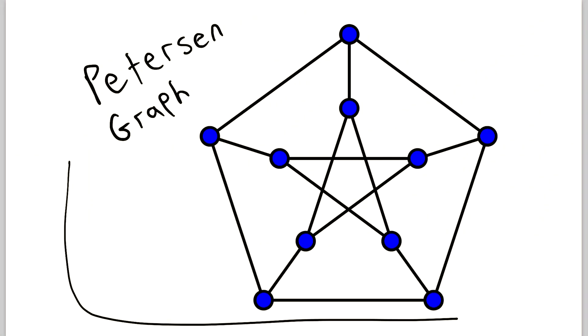And here is the most well known cubic graph. Every vertex in this graph has degree 3. It is called the Peterson graph, and I think it is a very nice looking graph, a very nice looking example of a cubic graph.